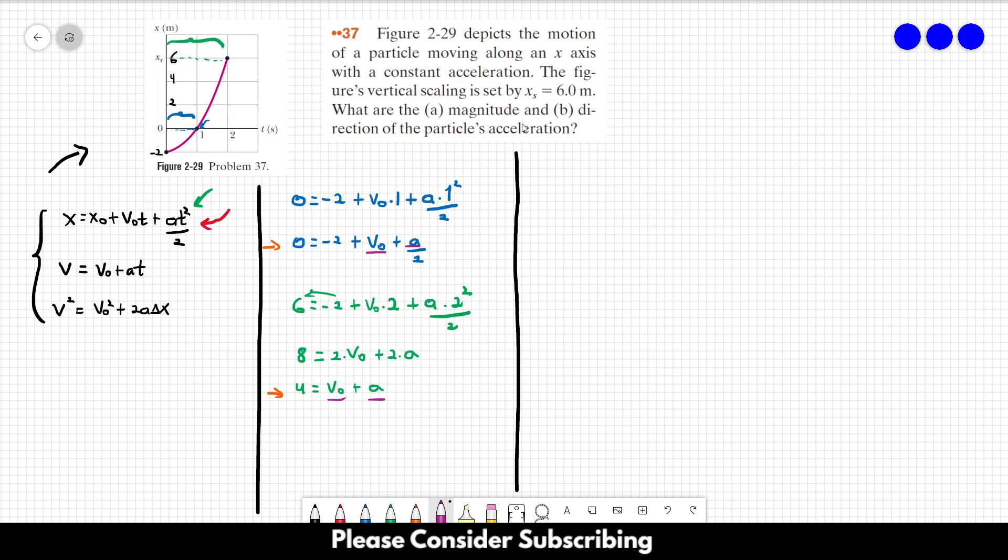We want the acceleration, so let's eliminate v_0 from those equations. I will take this equation and isolate v_0. So v_0 equals 4 minus a. And I will replace this v_0 here by this value.